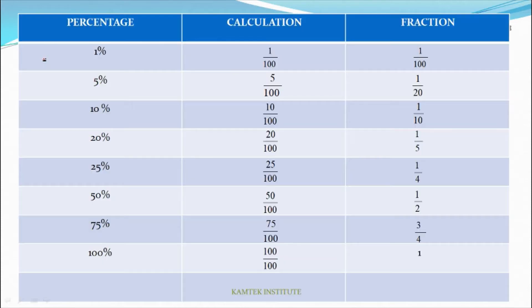Here we start. This is our percentage-fraction table — I'm sure you must have watched my previous video where we discussed it in detail. Just to refresh you: 1% equals 1/100, 5% equals 1/20, 10%, 20%, 25%, 50%, and 75% equals 3/4. Try to remember these by heart — this will save you a lot of time in competitive exams.